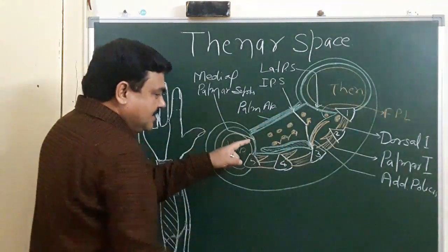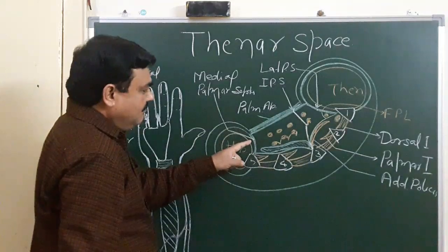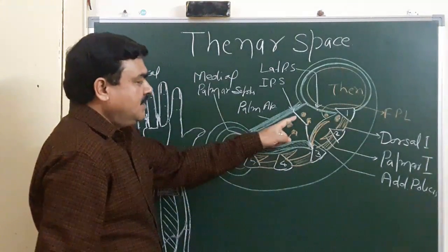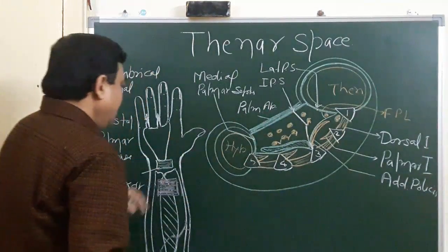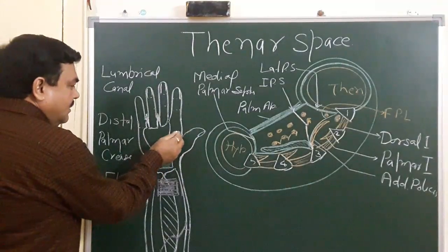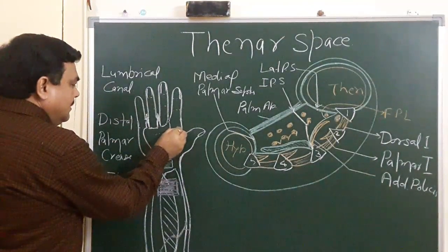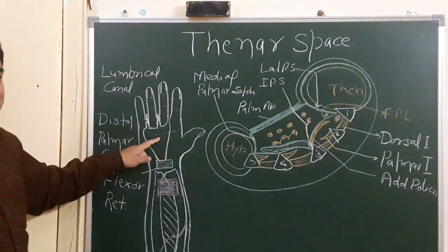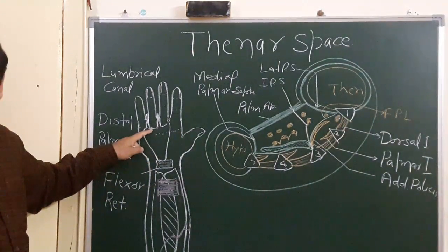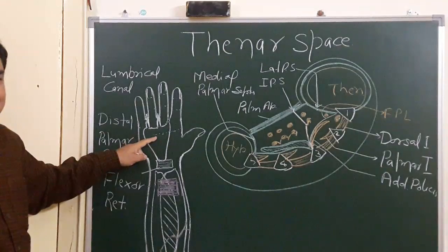Here, this is mid-palmar space, this is medial palmar septum, this is intermediate palmar septum. And here, there is proximal transverse crease, this is distal transverse crease, this is proximal transverse crease.